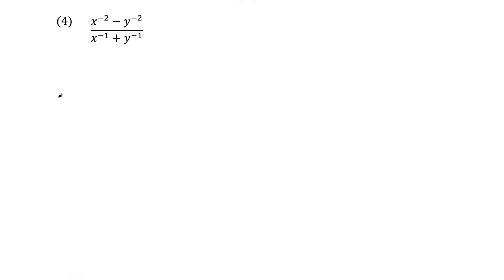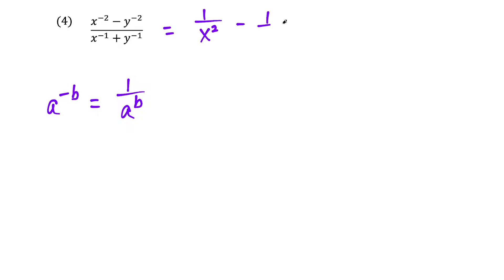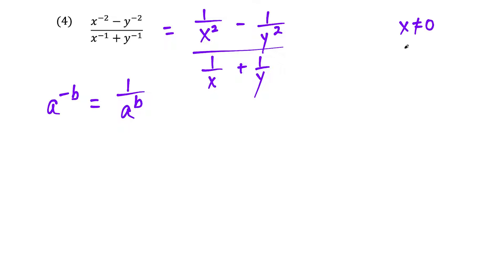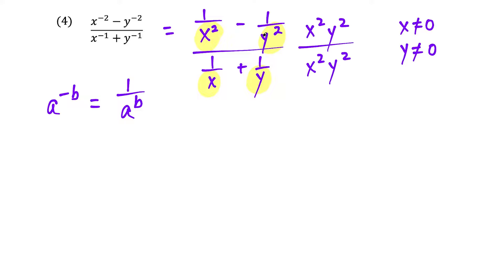Question four, we're going to simplify this compound fraction using the rule that a to the negative b equals one over a to the positive b. So I'll rewrite the expression as one over x squared minus one over y squared, all over one over x plus one over y. Before jumping in, x cannot equal zero and y cannot equal zero, since those would give division by zero. We'll multiply the top and bottom by x squared y squared, the least common denominator of x squared, y squared, x, and y.